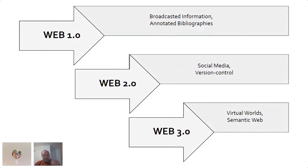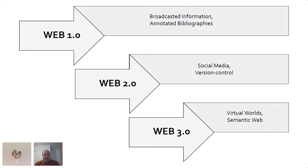This is also rooted in the evolution of the web. The first part of the web was Web 1.0, which happened from the beginning of the graphical web browser to about the early to mid 2000s, and that involved broadcasted information and things like annotated bibliographies — it was quite static.